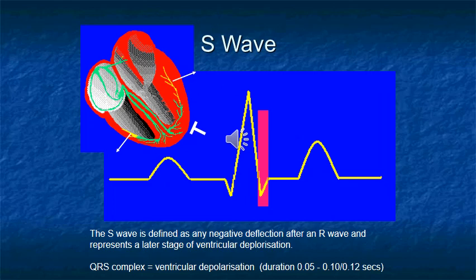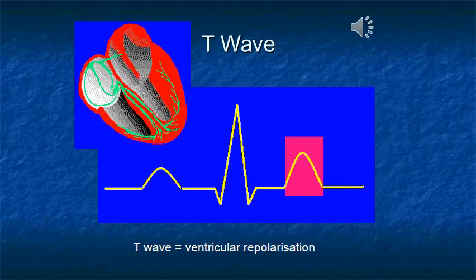The S wave represents a later stage of ventricular depolarization. The T wave represents ventricular repolarization.